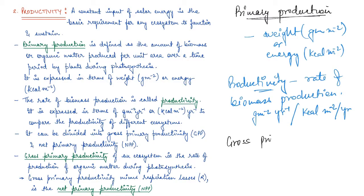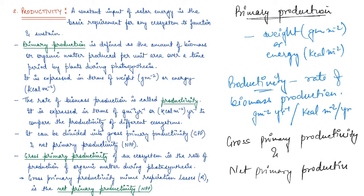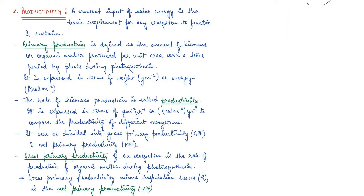Gross primary productivity (GPP) means the productivity of an ecosystem, which is the rate of production of organic matter during photosynthesis.